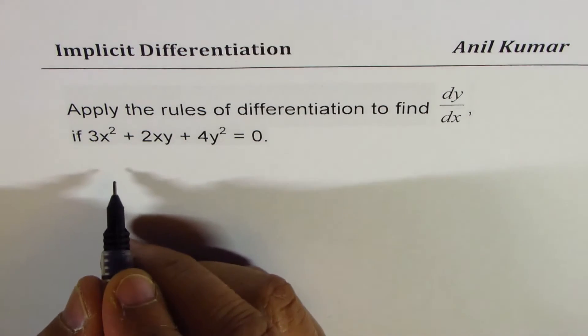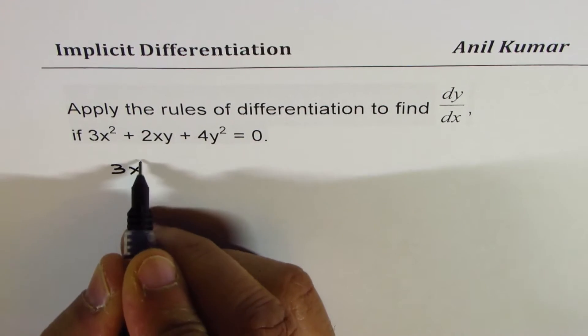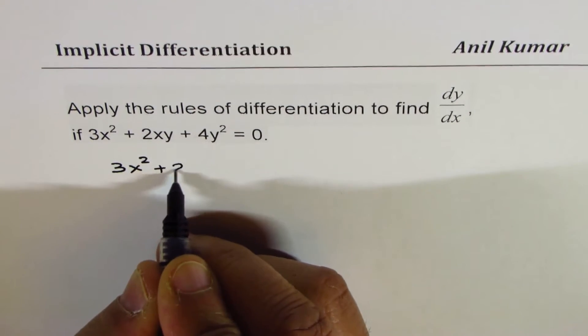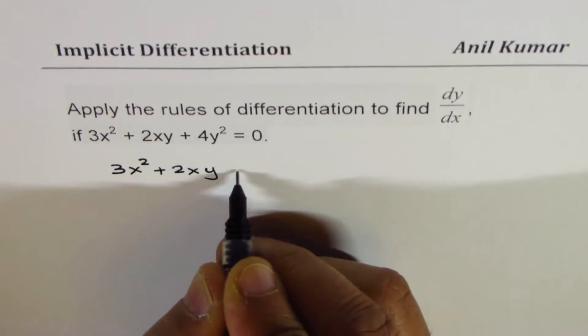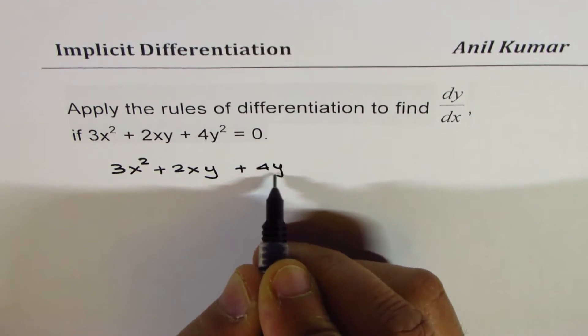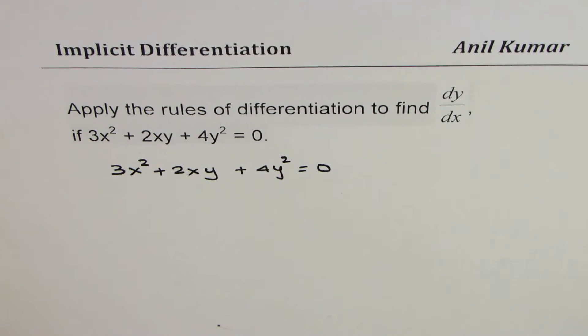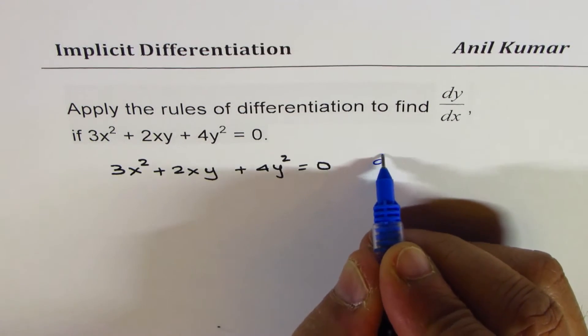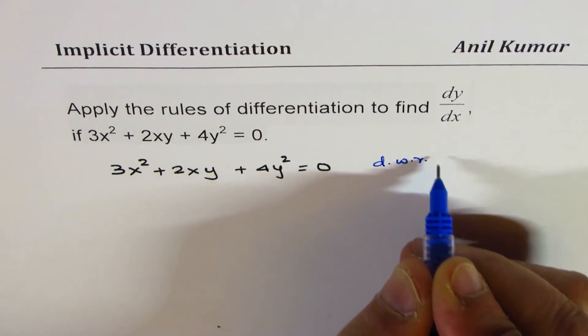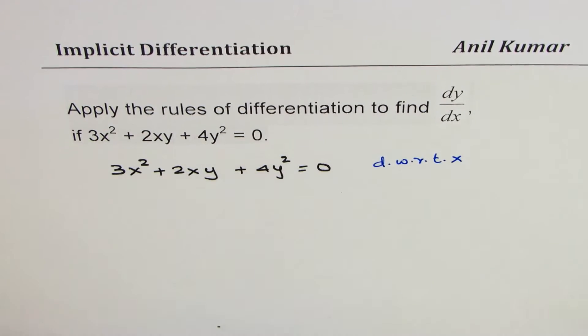The equation given to us is 3x squared plus 2xy plus 4y squared equals 0. Now we can differentiate both sides with respect to x, so we'll differentiate with respect to x.